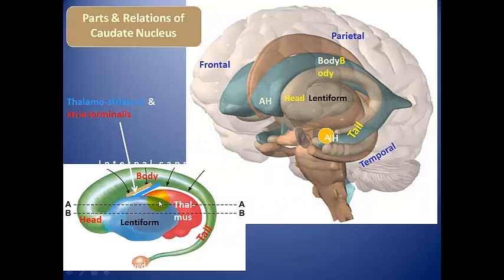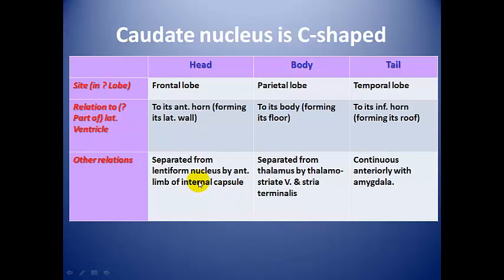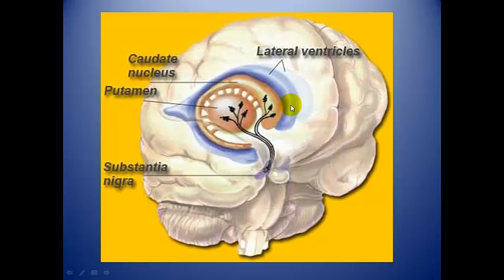Here are the thalamus, stria terminalis, and thalamostriate vein. The head of the caudate lies in the frontal lobe, body lies in the parietal lobe, and tail lies in the temporal lobe. The head is continuous with the lentiform nucleus, the tail continues with the amygdala, and the body is separated from the lentiform by the internal capsule — as is the head.